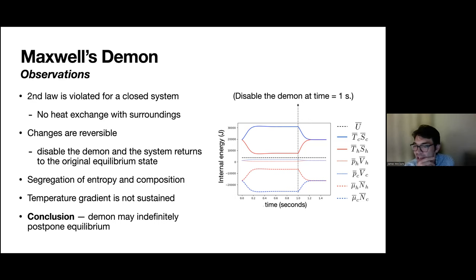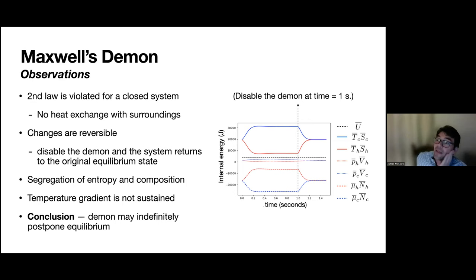Conservation of energy is not violated even though you have the second law violation — the system isn't exchanging any heat with the surroundings. It's just creating this entropy dilemma. This informs whether we can always assume that entropy production is positive.